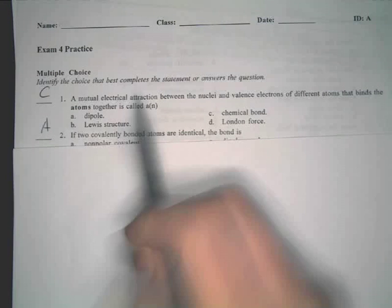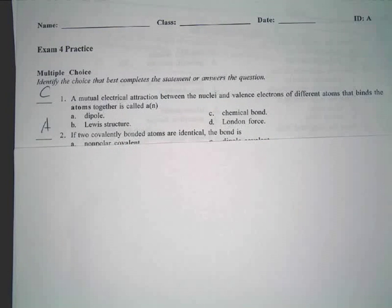So, number one, a mutual electrical attraction between nuclei and valence electrons of a different atom that binds the atoms together, well, it's a chemical bond. This is a really fancy way of saying a chemical bond.